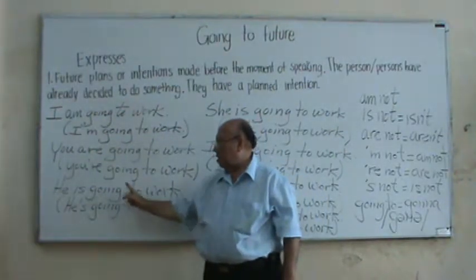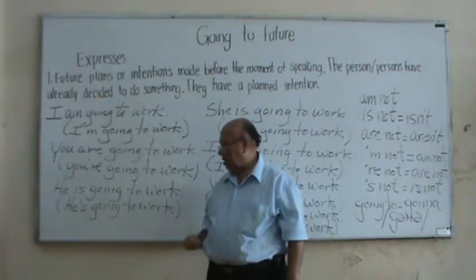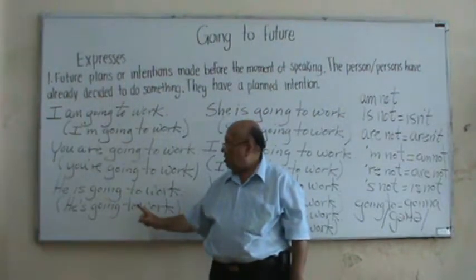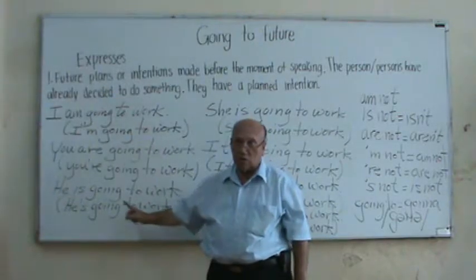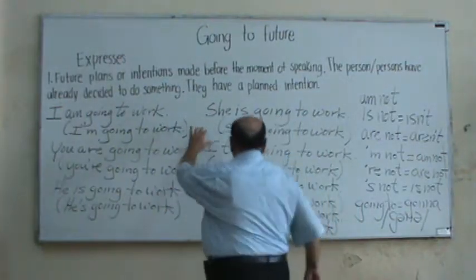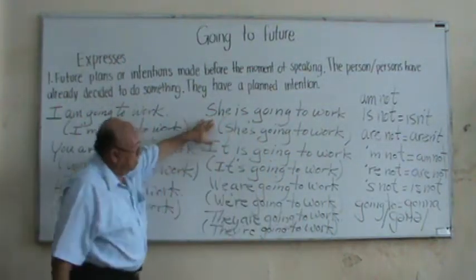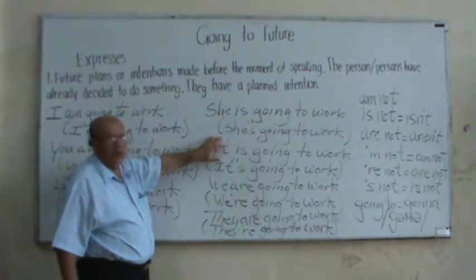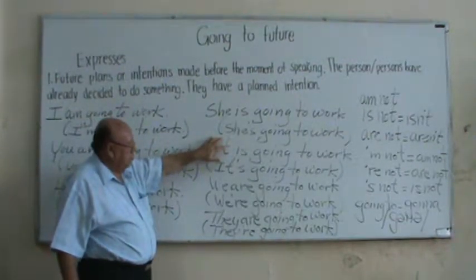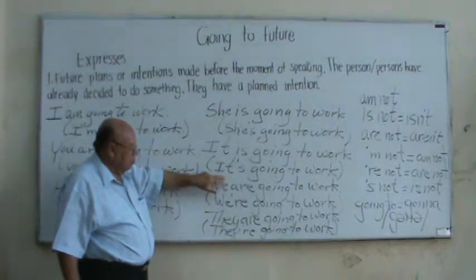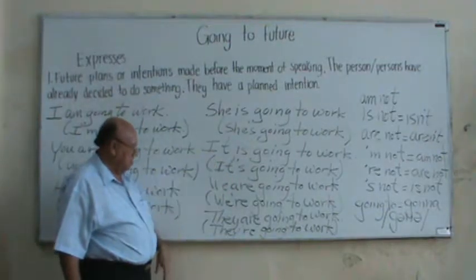He is going to work — Él va a trabajar. The contraction is 'He's going to work.' She is going to work — Ella va a trabajar. The contraction is 'She's going to work.' It is going to work — Va a trabajar. The contraction is 'It's going to work.'